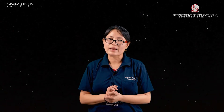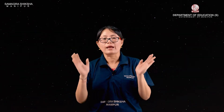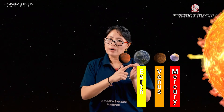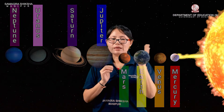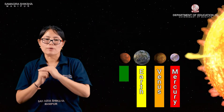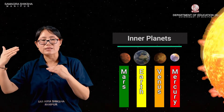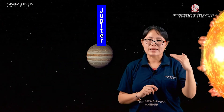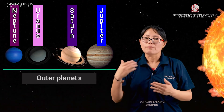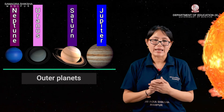In 2006, the International Astronomical Union (IAU) redefined the definition of a planet, and Pluto was reclassified. The eight planets in order are: Mercury, Venus, Earth, Mars, Jupiter, Saturn, Uranus, and Neptune. Out of these eight planets, Mercury, Venus, Earth, and Mars are the inner planets. Jupiter, Saturn, Uranus, and Neptune are the outer planets. The number of moons each planet has also varies.